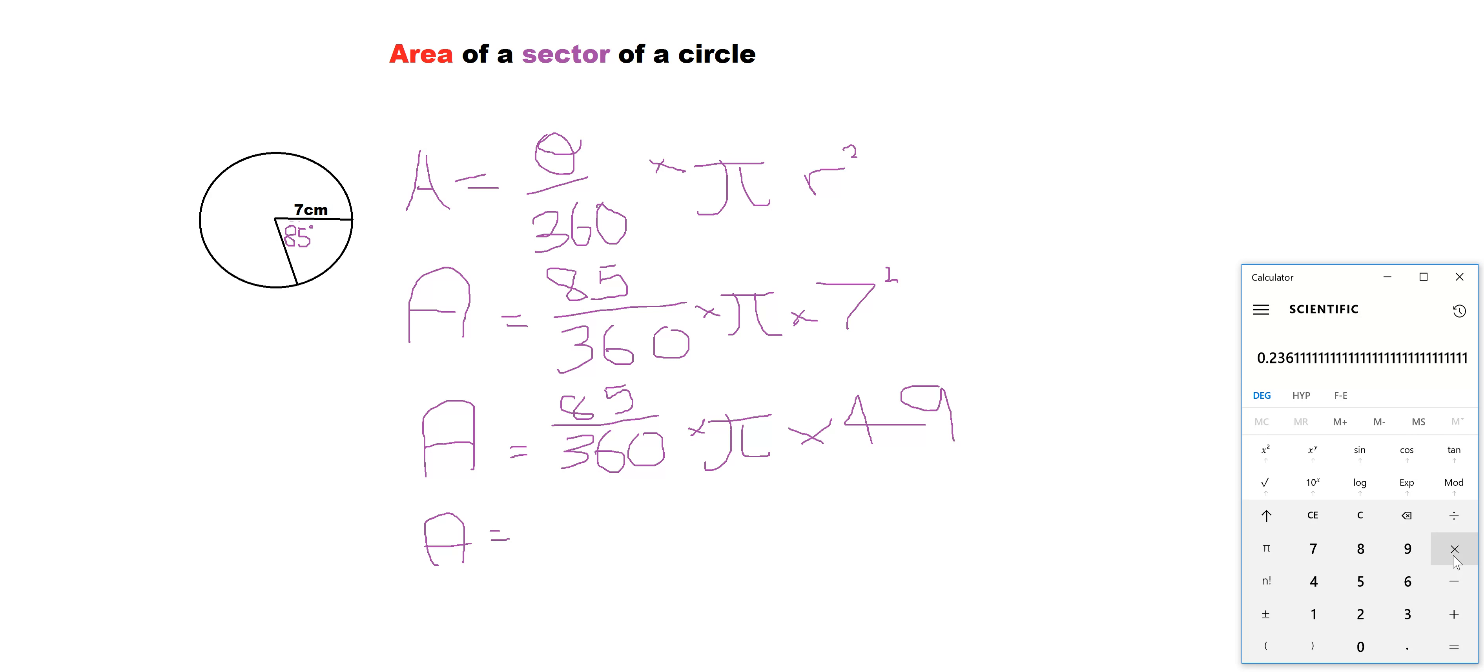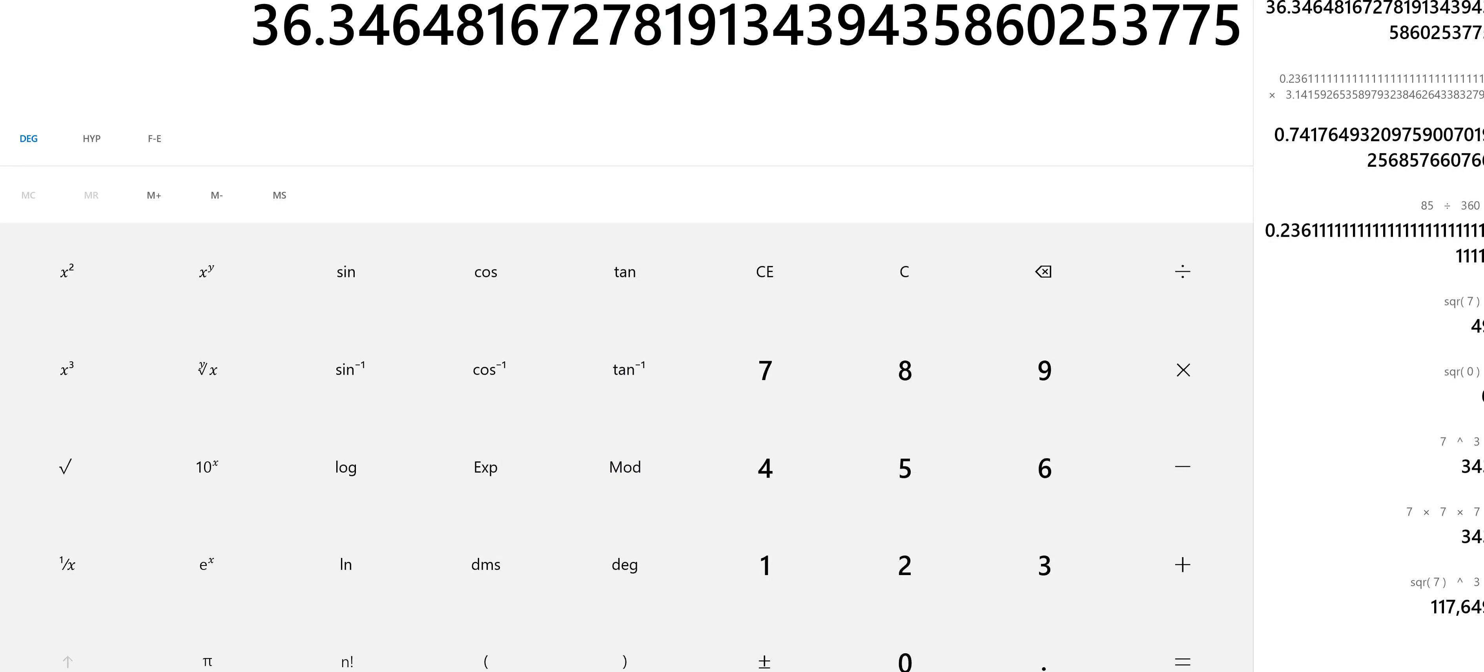And then what we're going to do is times this by pi. Okay, and then again, we're going to times that by 49 to see what that comes up with. Okay, so here we've got 36.34648, so on and so forth. But let's have a look here.